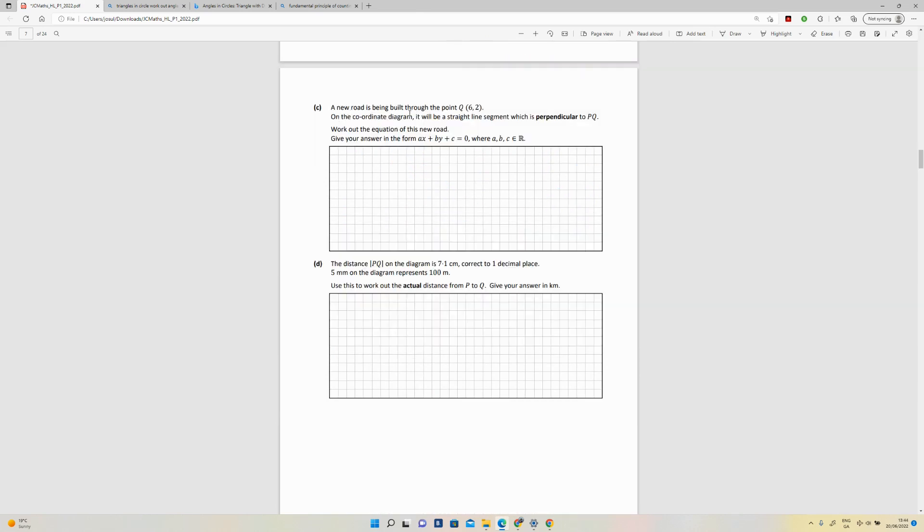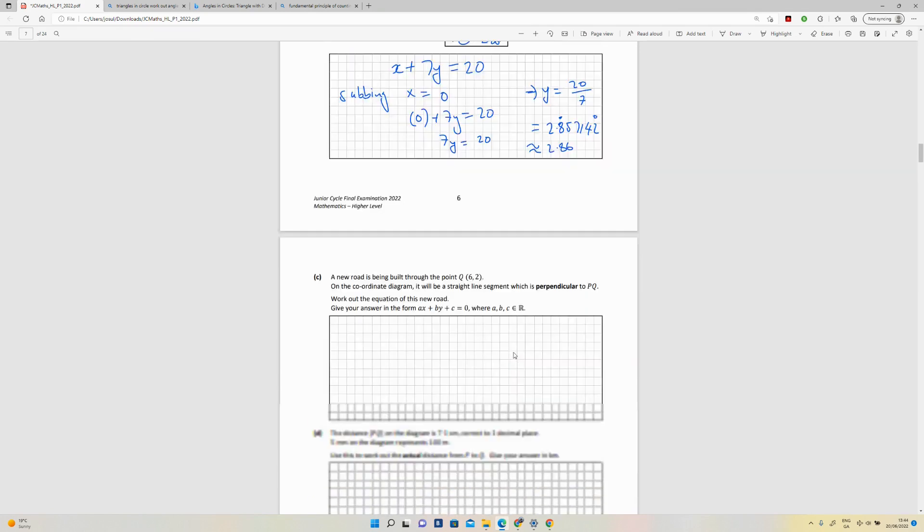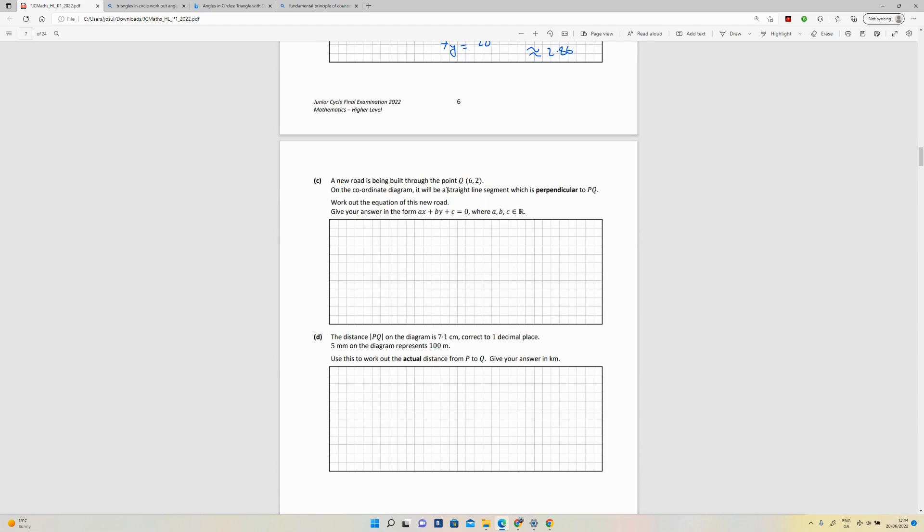Part C: A new road is being built through point Q (6, 2), so that's 6, 2, which is already there, so that's point Q. On the coordinate diagram, it will be a straight line which is perpendicular to PQ. Work out the equation of this new road. Give your answer in the form ax + by + c equals zero.